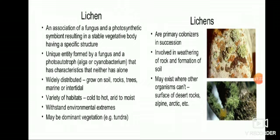Lichens is an association of a fungus and a photosynthetic symbiont. This photosynthetic symbiont can be Cyanobacteria or an algae, resulting in a stable vegetative body having a specific structure. It is a unique entity formed by a fungus and a photoautotrophic alga or Cyanobacterium that has characteristics that neither has alone.